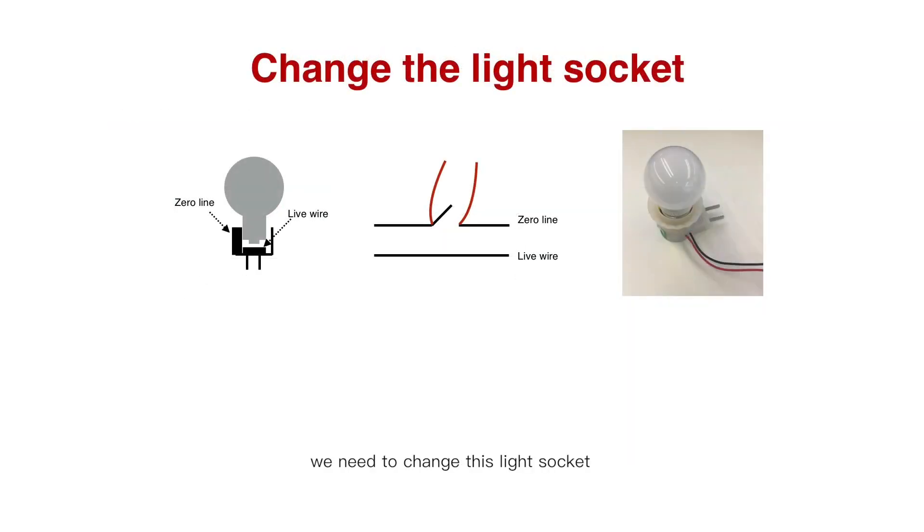Next, we need to change this light socket. Here is the diagram of light socket. As we see in the left diagram, it is actually plugged to a power supply with both ends representing the zero line and the live wire, respectively. In fact, this socket has a switch to control its connection or disconnection. What we need to do is add both sides of the switch lead out and wire.